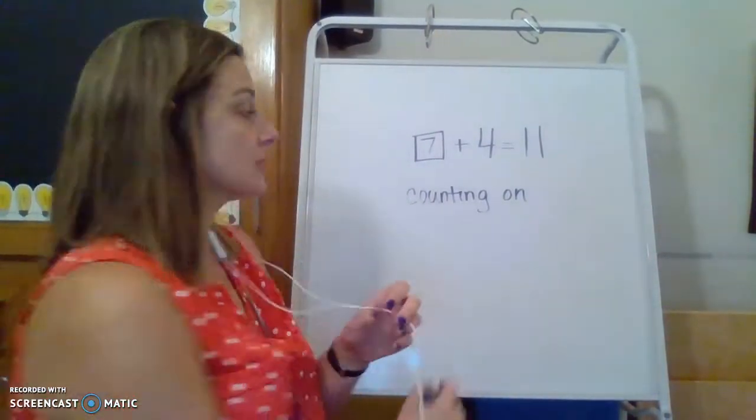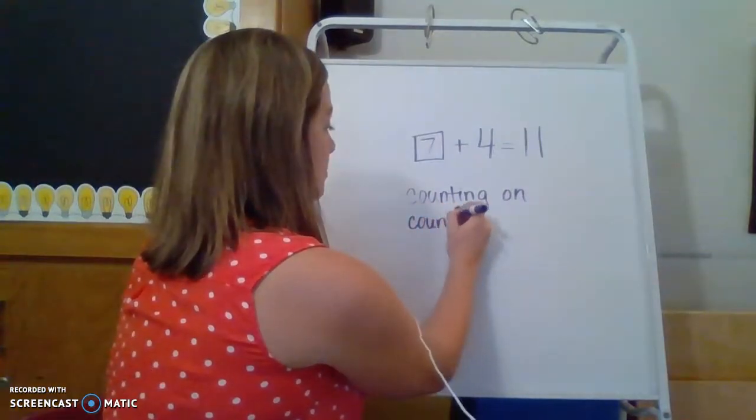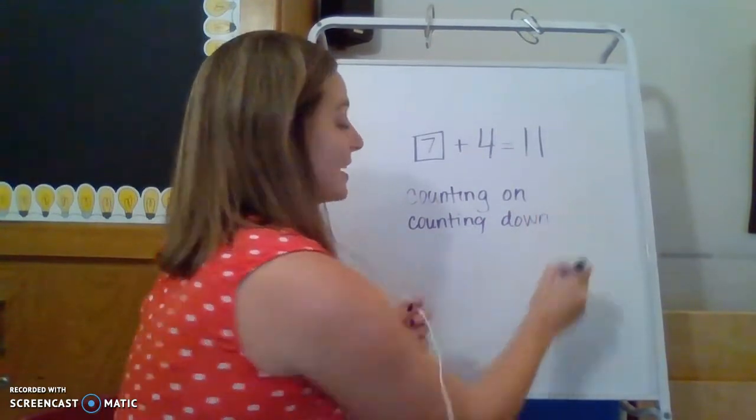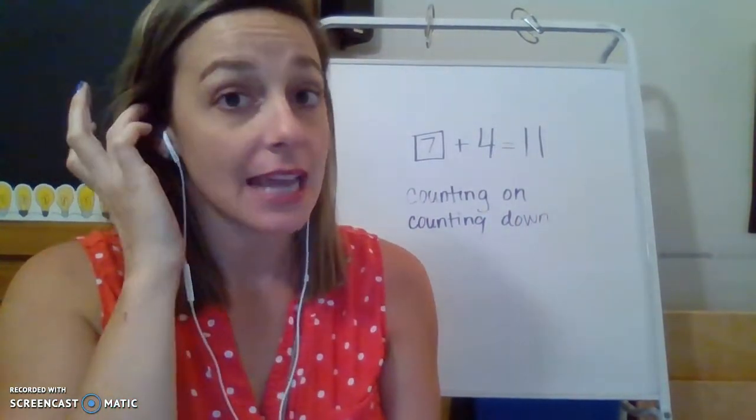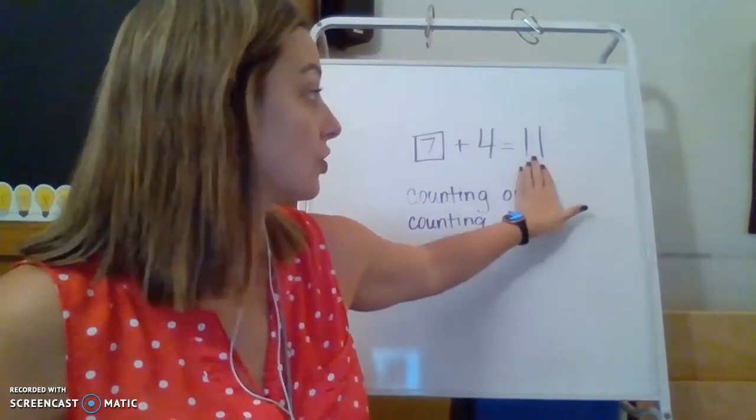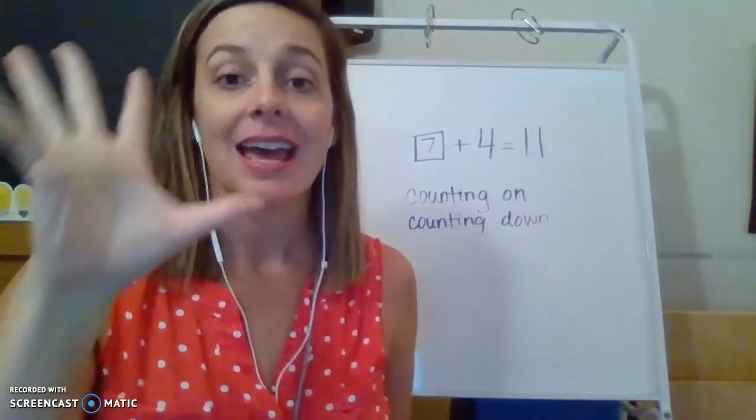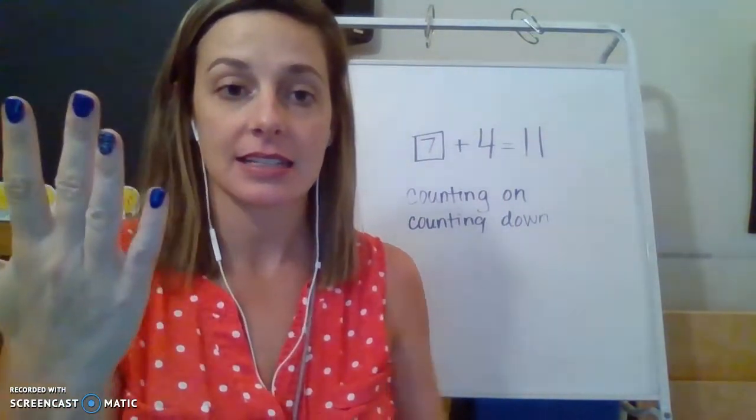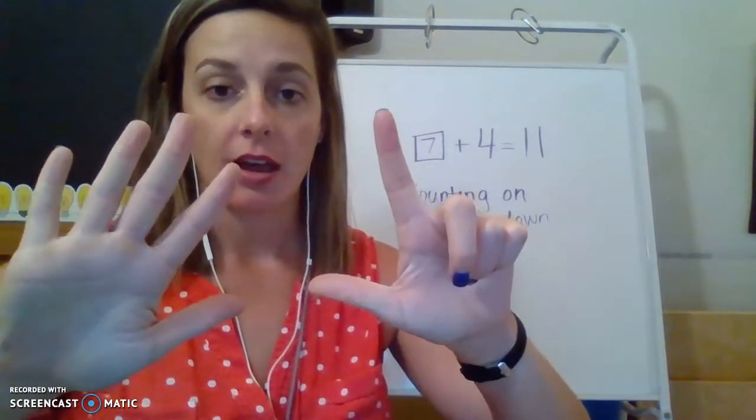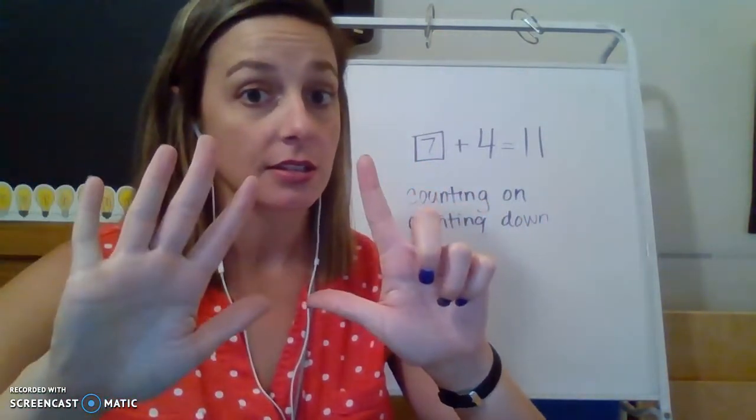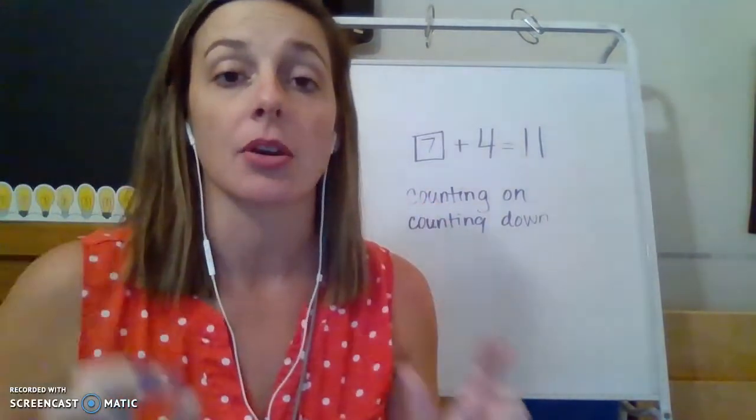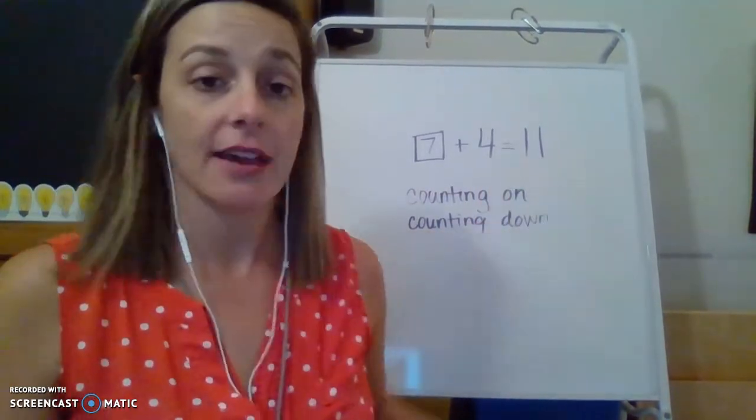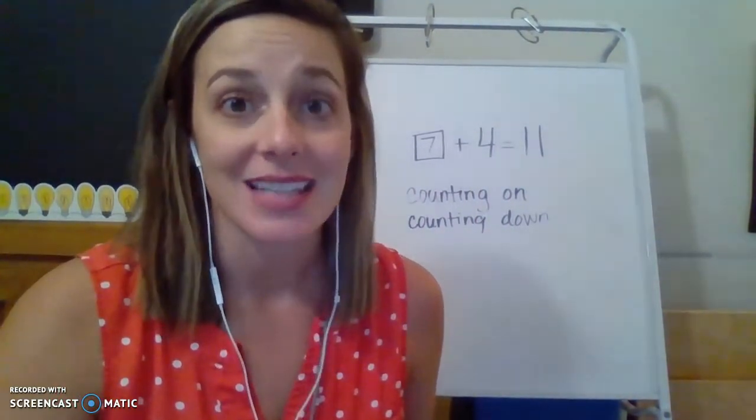Now let's also just for practice, and so that we can remember how to do it, let's practice counting down. Remember when we count down, our numbers are getting smaller. So we need to grab the big number first: 11, 10, nine, eight, seven, six, five, four. I stopped when I got seven fingers because I stopped at the number four. So seven plus four equals 11. No matter which way we did it, we got the same exact answer.